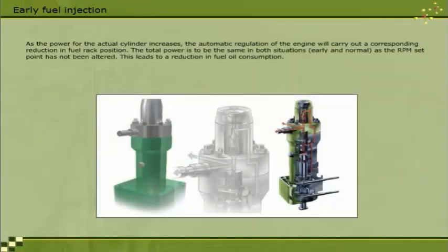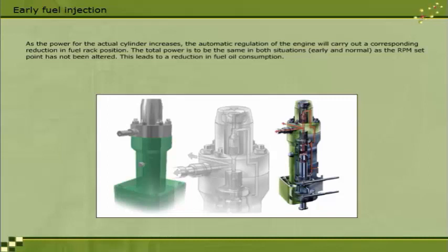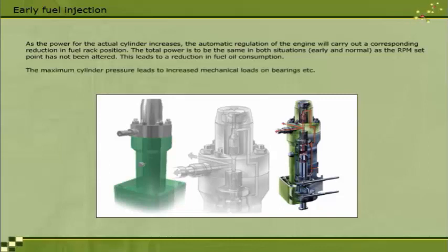As the power for the actual cylinder increases, the automatic regulation of the engine will carry out a corresponding reduction in fuel rack position. The total power is to be the same in both situations — early and normal — as the RPM set point has not been altered. This leads to a reduction in fuel oil consumption. The maximum cylinder pressure leads to increased mechanical loads on bearings, etc.